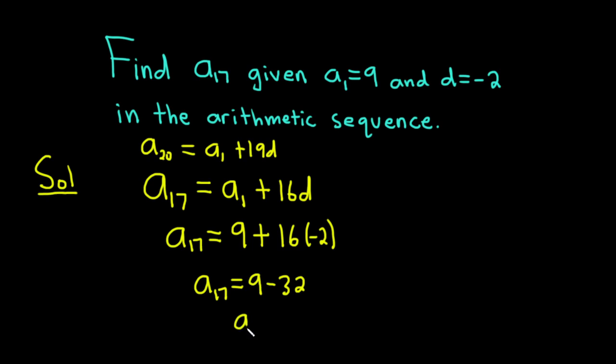And so finally, we have that the 17th term is equal to 9 minus 32, which is going to be negative 23. And that would be the 17th term.